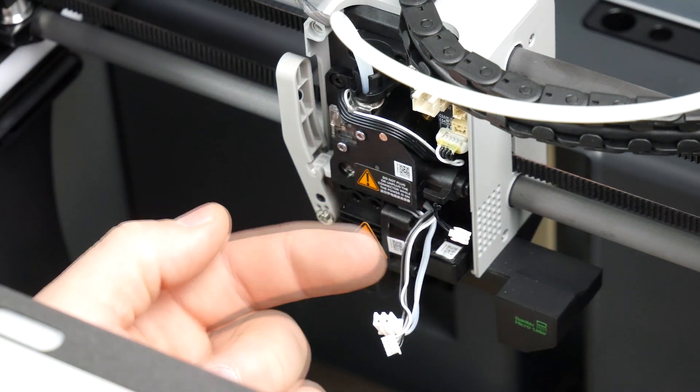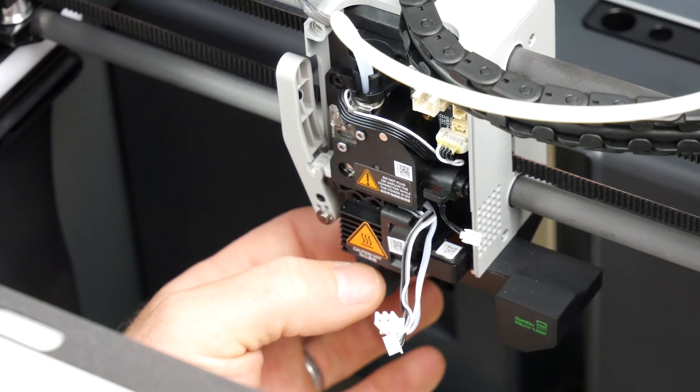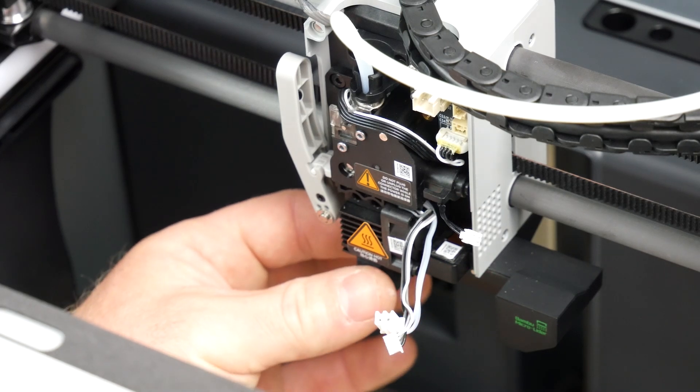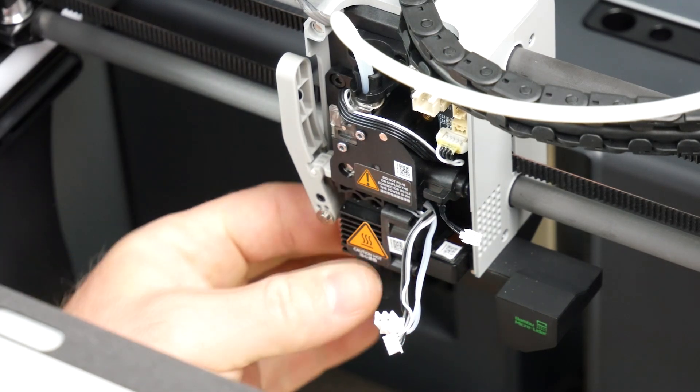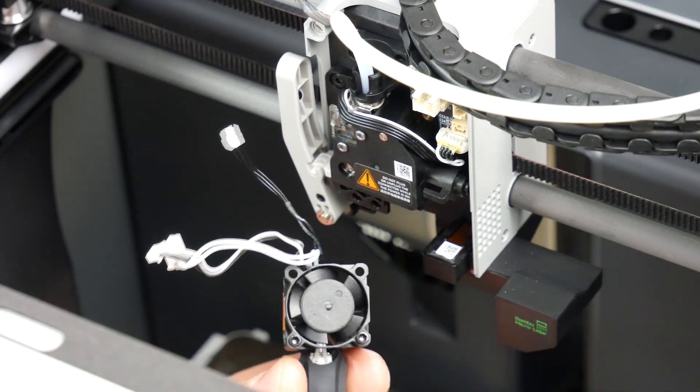Now that we've got our cables out from behind the retaining clip and our two screws completely removed, we can now remove the hotend itself. This is done in a downward motion. If you give it a bit of a wiggle down, it will drop out.